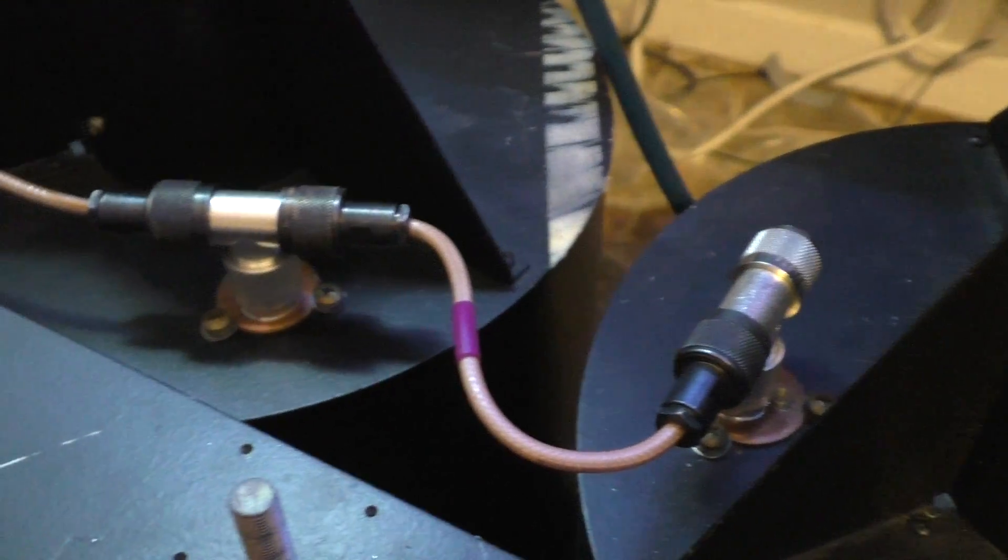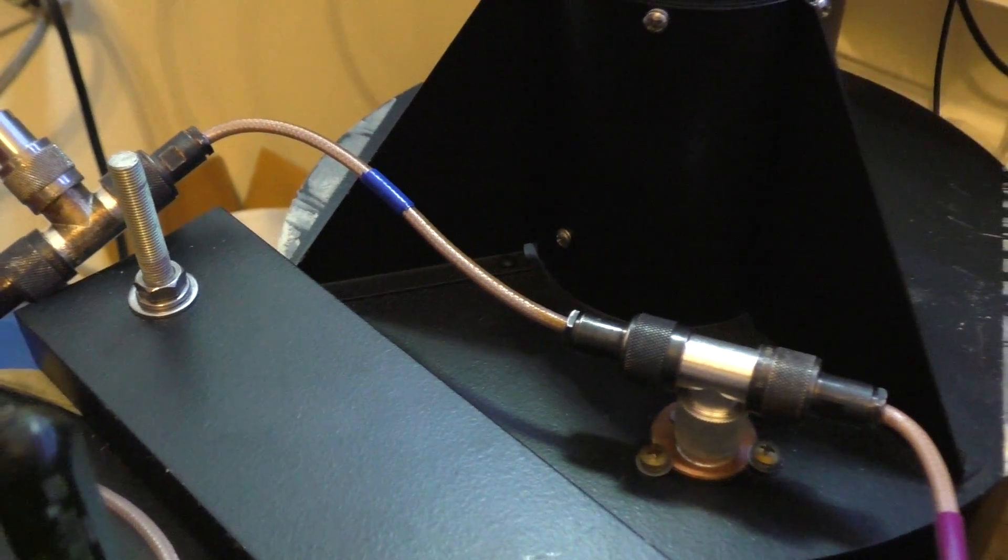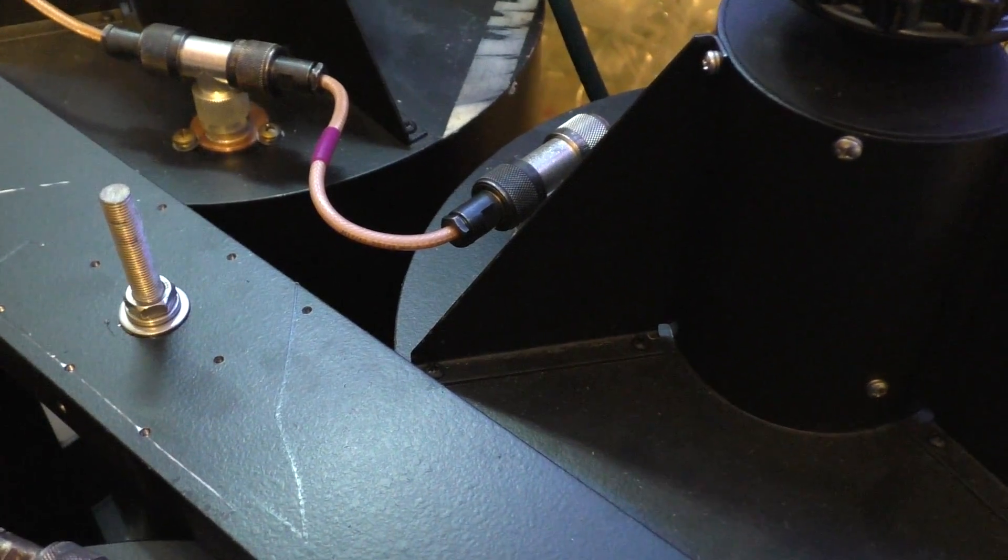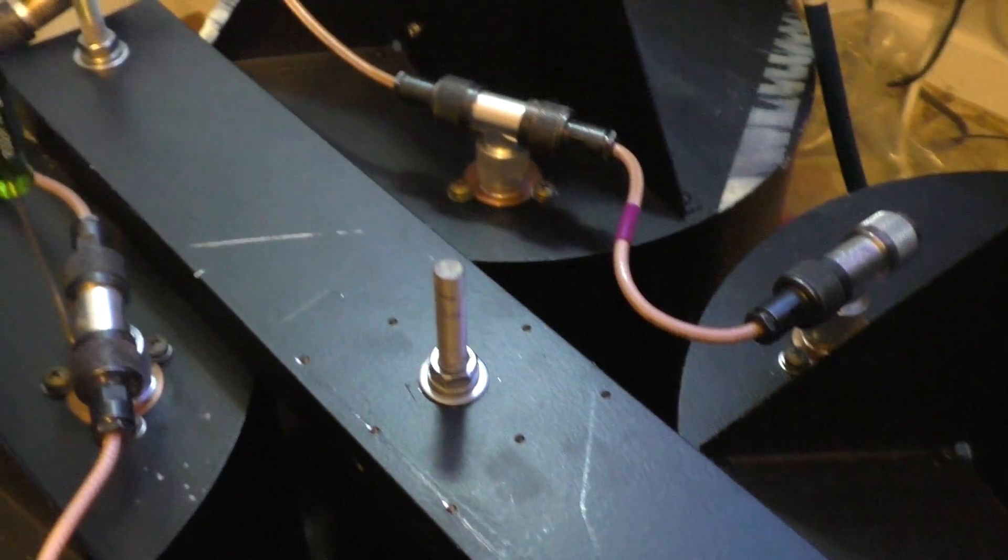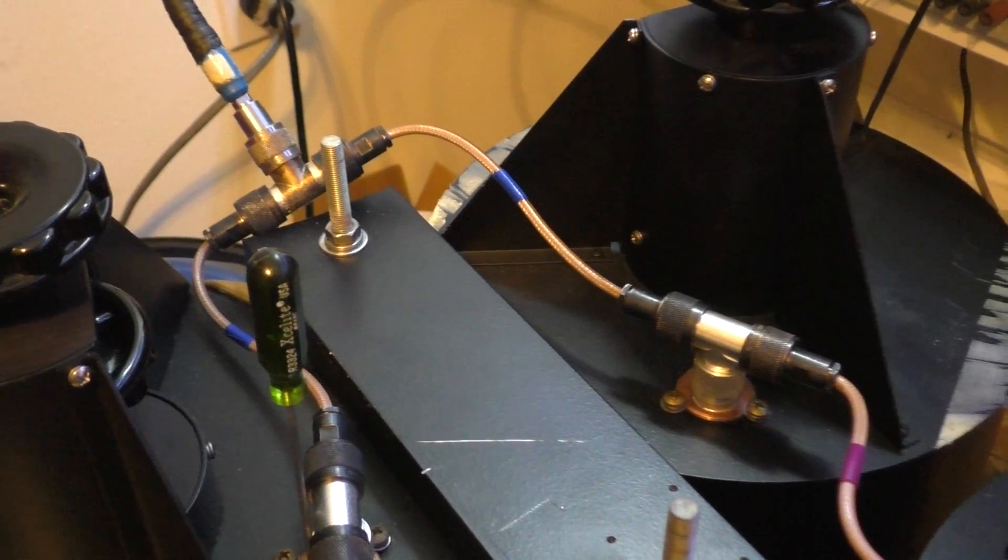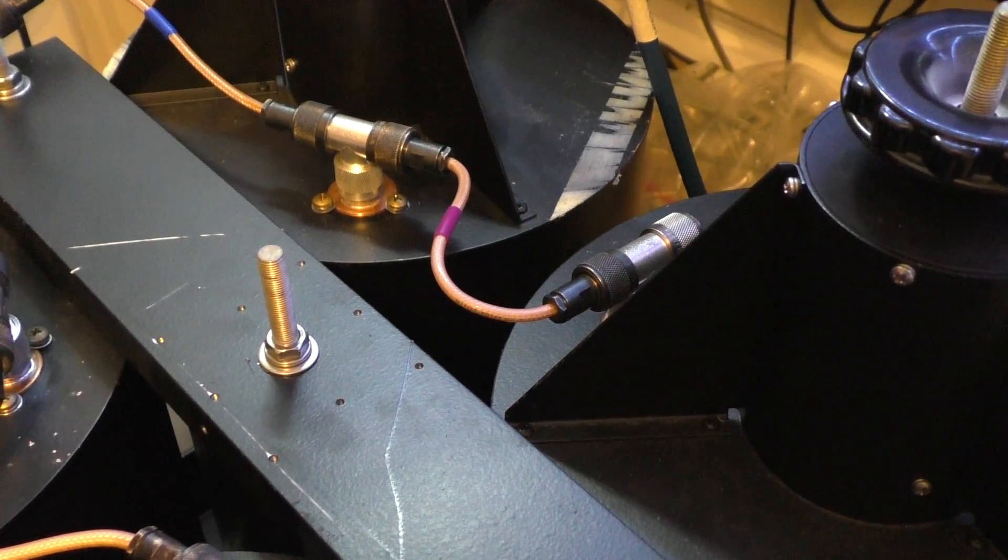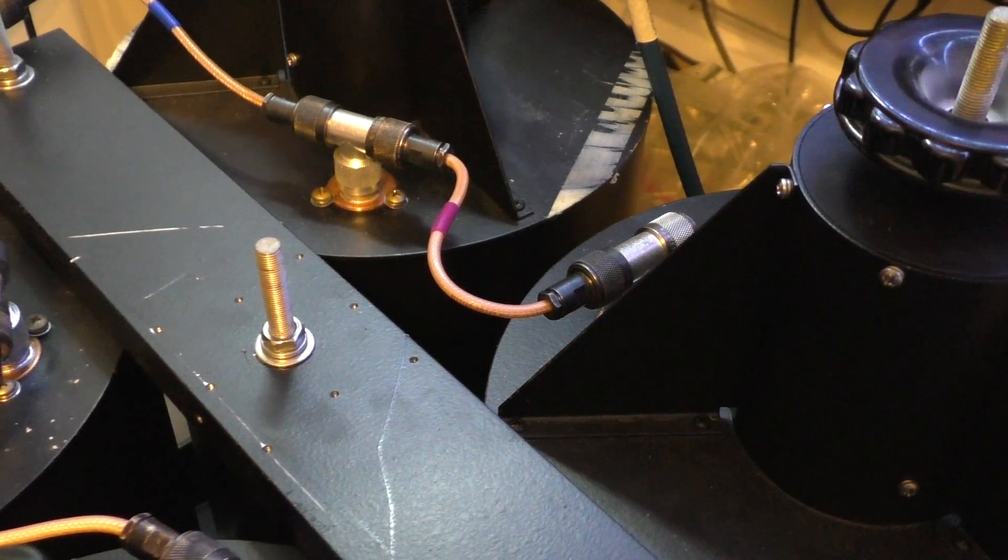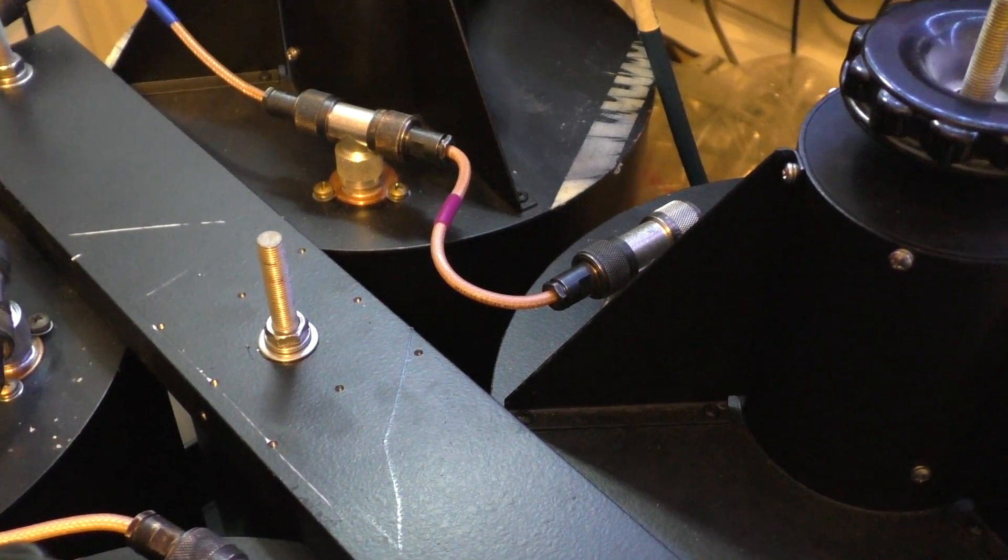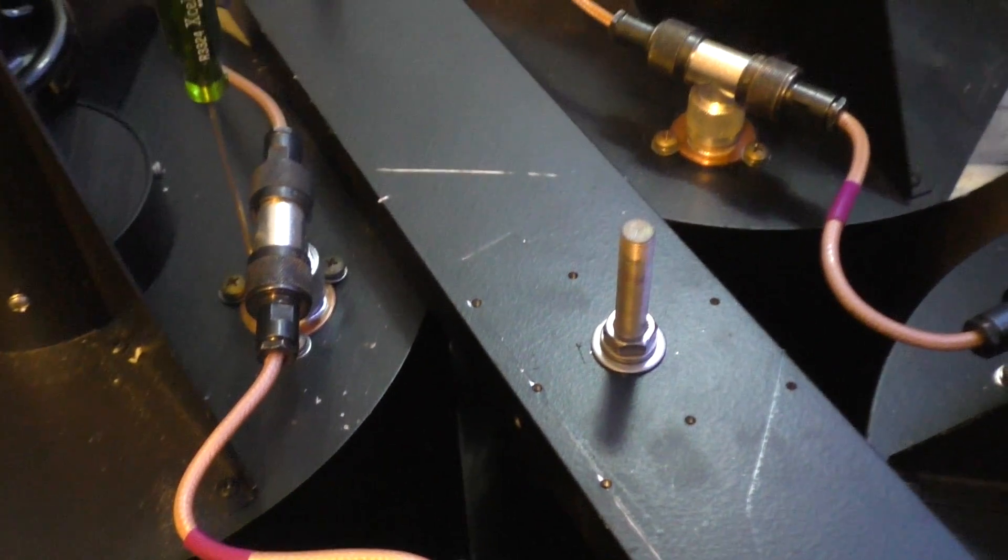Purple cables in the center and then blue cables here. I believe those are the links there. Purple is eight inches and then blue is 8.75 inches tip to tip. RG-142 is what's used here. You can use RG-400, anything with a velocity factor of 0.7 or 0.695.